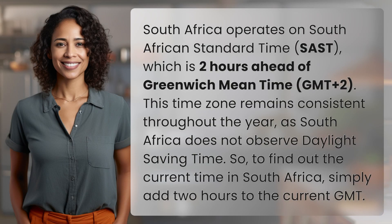South Africa operates on South African Standard Time, SAST, which is two hours ahead of Greenwich Mean Time, GMT plus two. This time zone remains consistent throughout the year, as South Africa does not observe daylight saving time. So, to find out the current time in South Africa, simply add two hours to the current GMT.